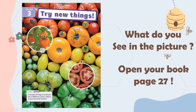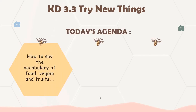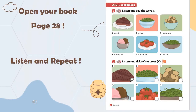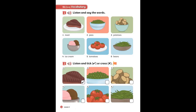Okay, open your book page 27. Today we are going to learn a new lesson — Lesson 3: Try New Things, mencoba hal-hal yang baru. Here is our agenda: first, we are going to learn how to say the vocabulary of food, veggies, and fruits, and also how to write the vocabulary of food, veggies, and fruits. Please open your book page 28.